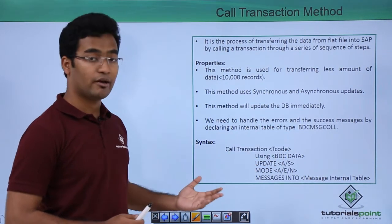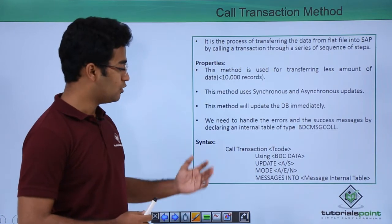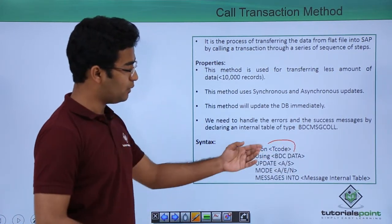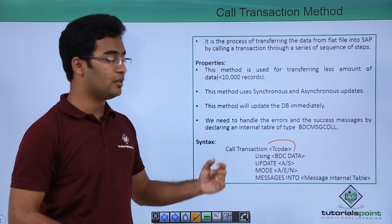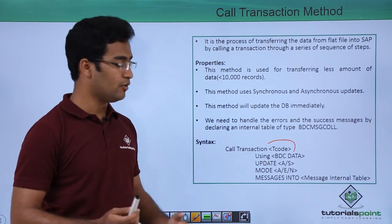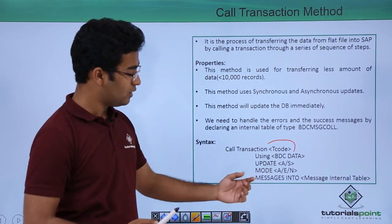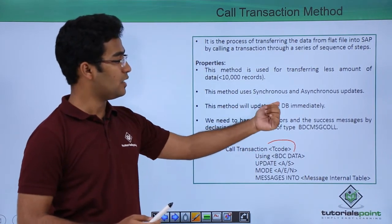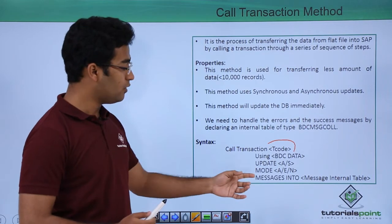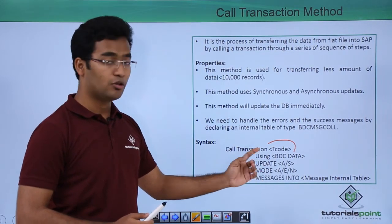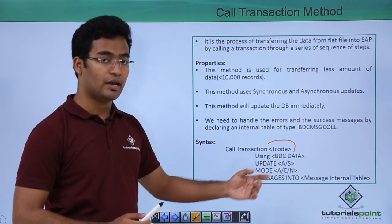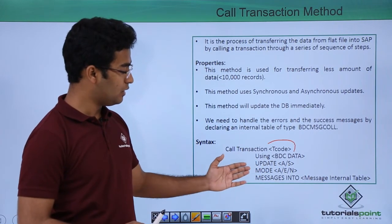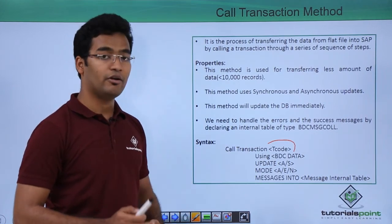Here is the syntax where we are using call transaction method. Call transaction, here we are providing our T code and using BDC data. We will see the BDC data in our next video. Here the update is A and S, which denotes asynchronous and synchronous update. We are providing the mode, which can be A, E, and N. Then we also have to provide the messages. We will see all these in detail in our next videos.